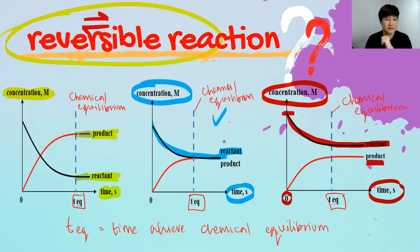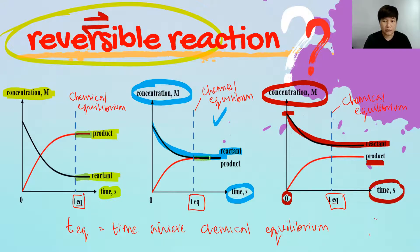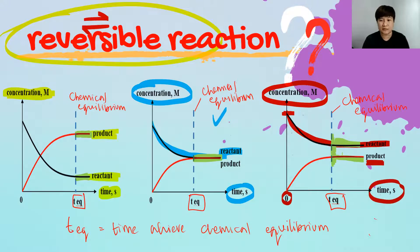In the first curve, chemical equilibrium is reached when the product and reactant curves start to go flat. The same applies to all other curves — when your reactant and your product both start to go flat, that is where your chemical equilibrium is achieved.